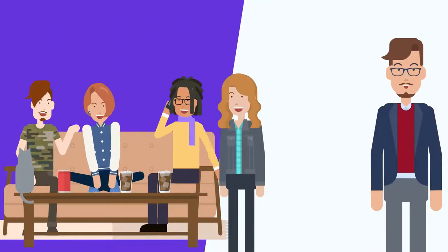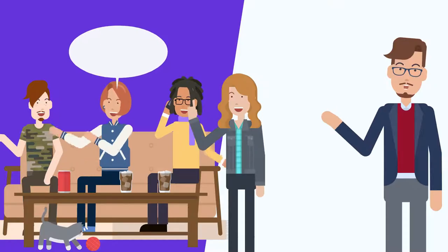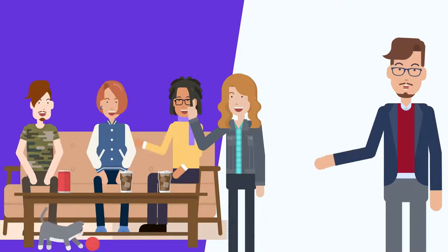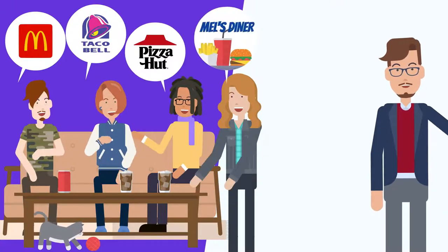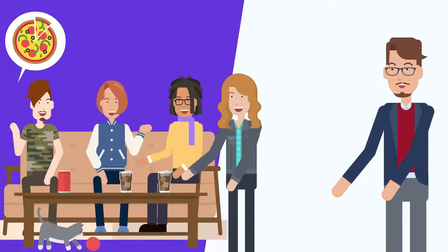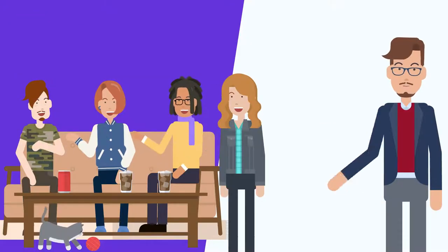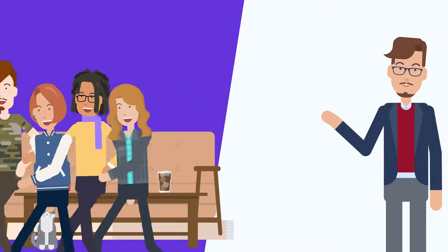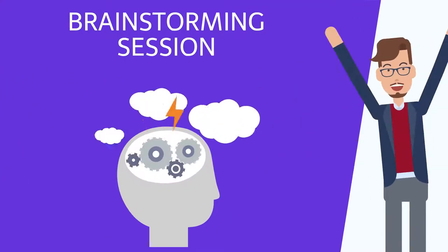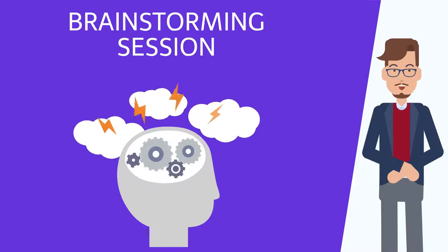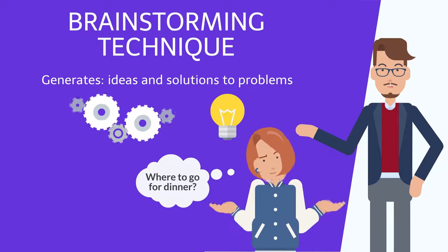You and your friends are hanging out, someone says 'I'm hungry, anyone else? Should we grab something to eat?' Everyone starts listing restaurants: McDonald's, Taco Bell, Pizza Hut, Mel's Diner, Fuzzy's Pizza Palace, the all-you-can-eat buffet, and the local corner store. After a bit of discussion you head out to grab a bite — you were just part of an unofficial brainstorming session. Brainstorming is a common technique that generates ideas and creative solutions to problems, in this case where to go for dinner.